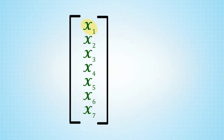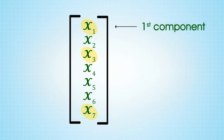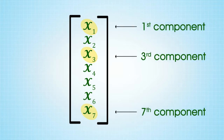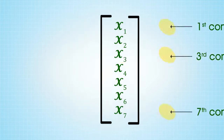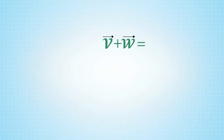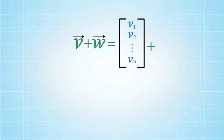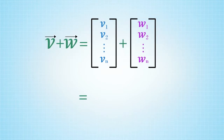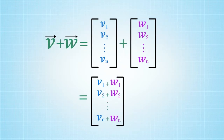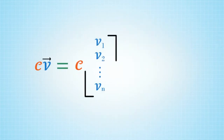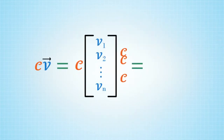Thus, x1, x3, x7 will represent the first, third, and seventh components of x, respectively. Algebraically, we can add and subtract vectors of the same size, and scale vectors by a constant.